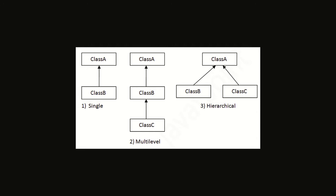On the second side we have multi-level inheritance, which is also a type of single inheritance but each class will inherit another class. Like class A is extended inside class B, so class B has the properties and methods of class A. Now class C is extending class B, so class C will have properties and methods of class B and class A as well, since class B already has class A's properties.